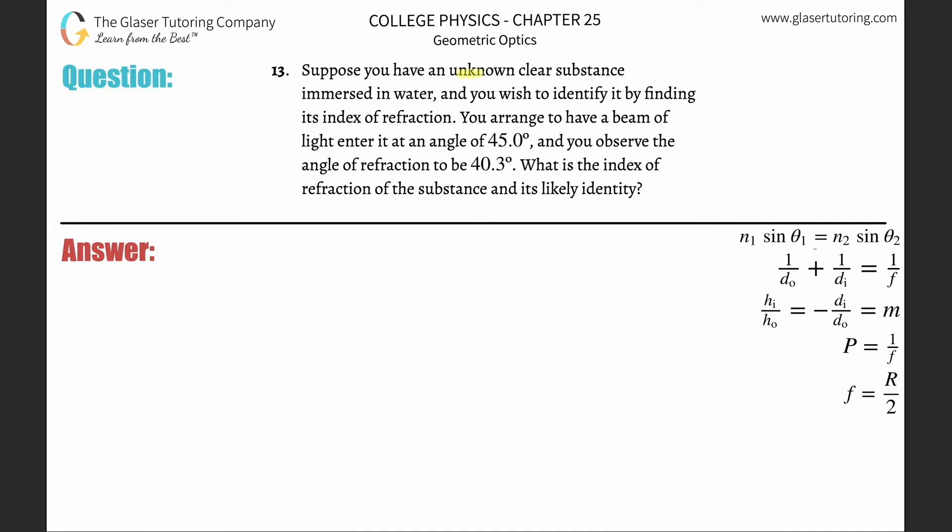Number 13: Suppose you have an unknown clear substance immersed in water and you wish to identify it by finding its index of refraction. You arrange to have a beam of light enter it at an angle of 45 degrees, and you observe the angle of refraction to be 40.3°. What is the index of refraction and the likely identity?